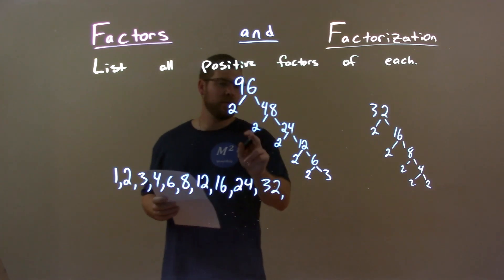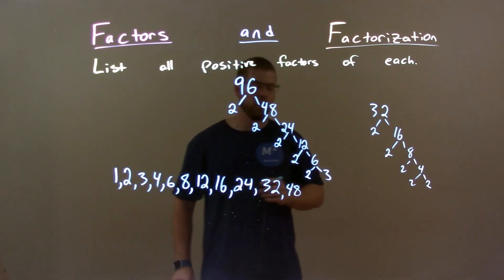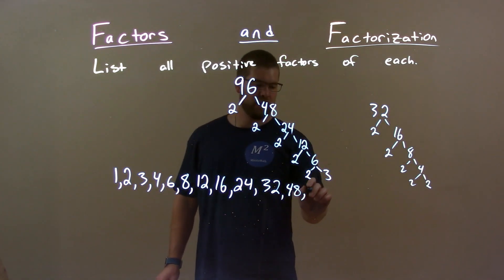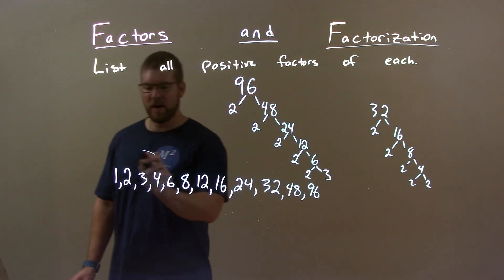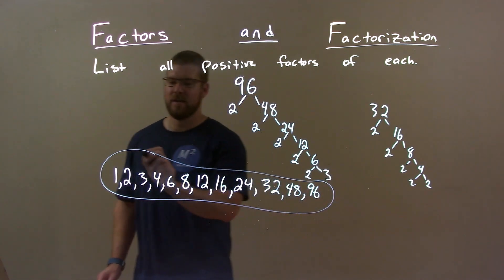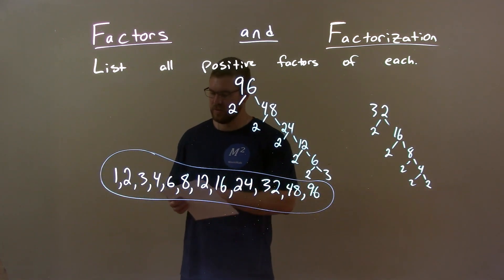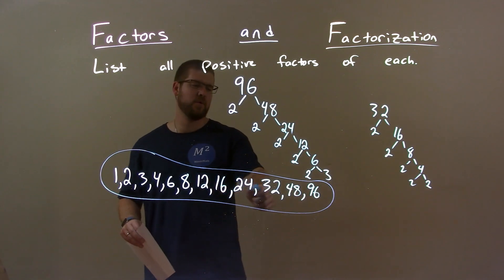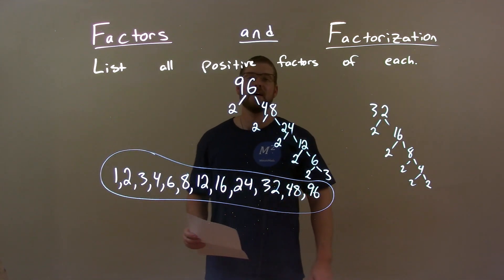48 we know is 2 times 2 times 2 times 2 times 3. And now that we're halfway from 96, we don't need any more except for 96 itself. So my final answer here is 1, 2, 3, 4, 6, 8, 12, 16, 24, 32, 48, and 96.